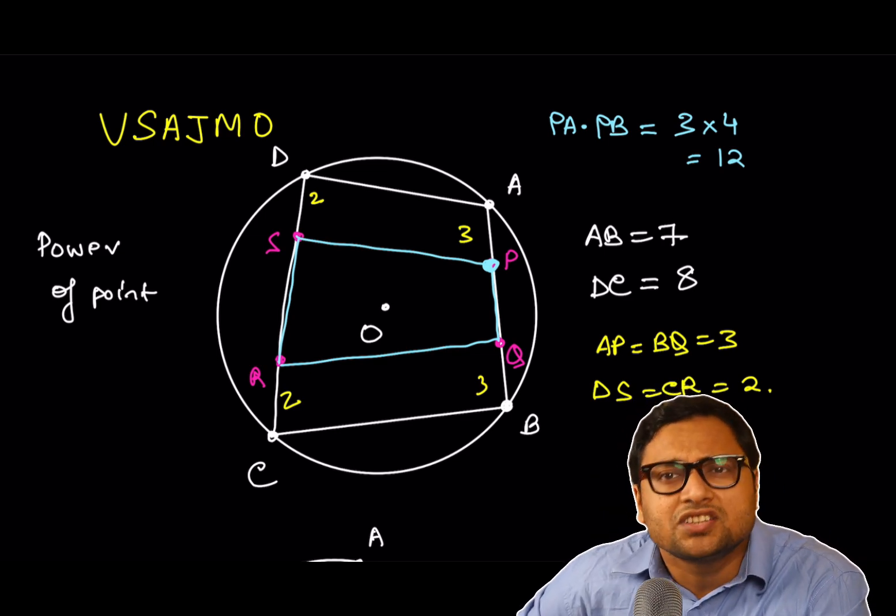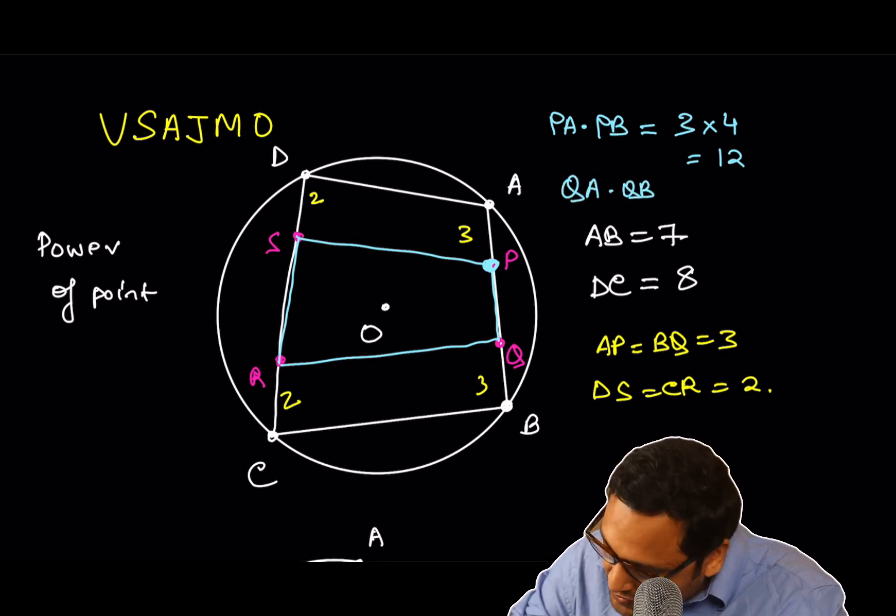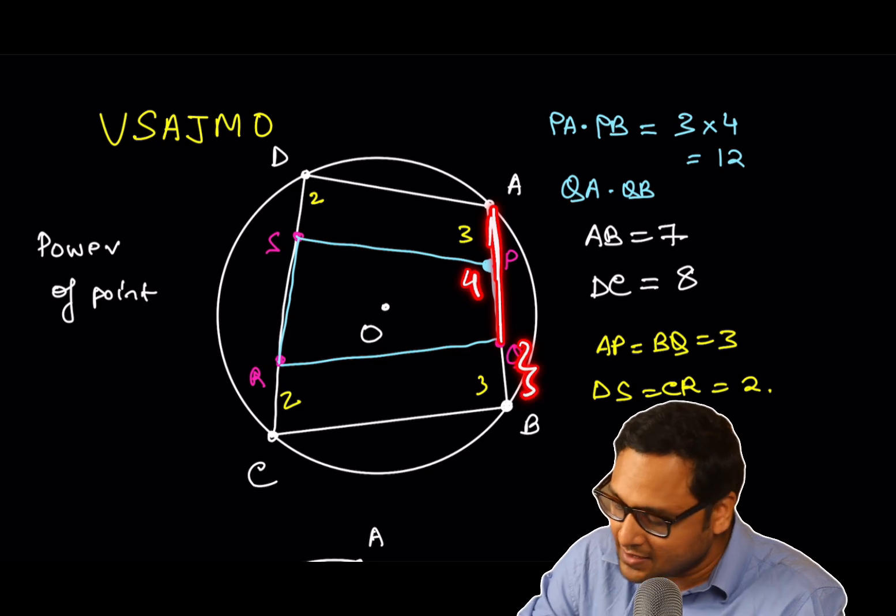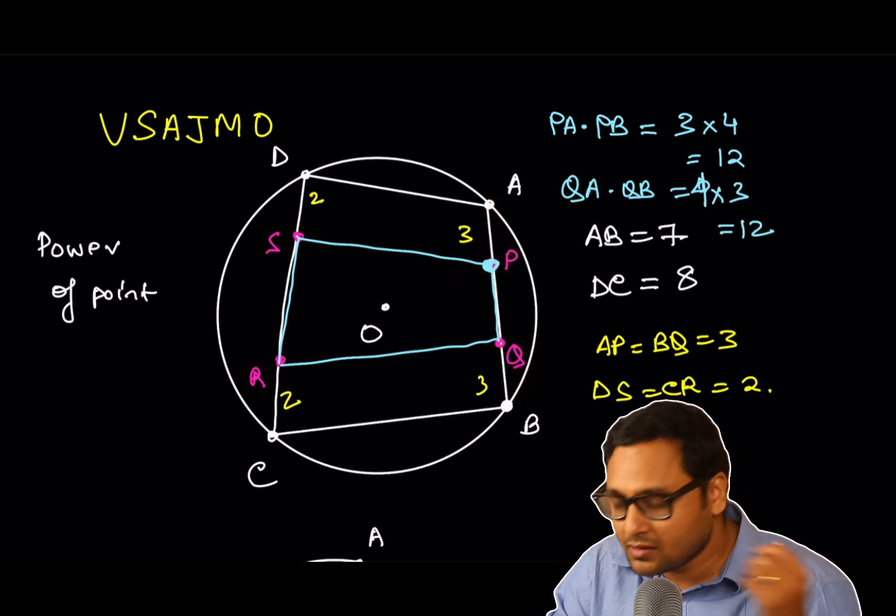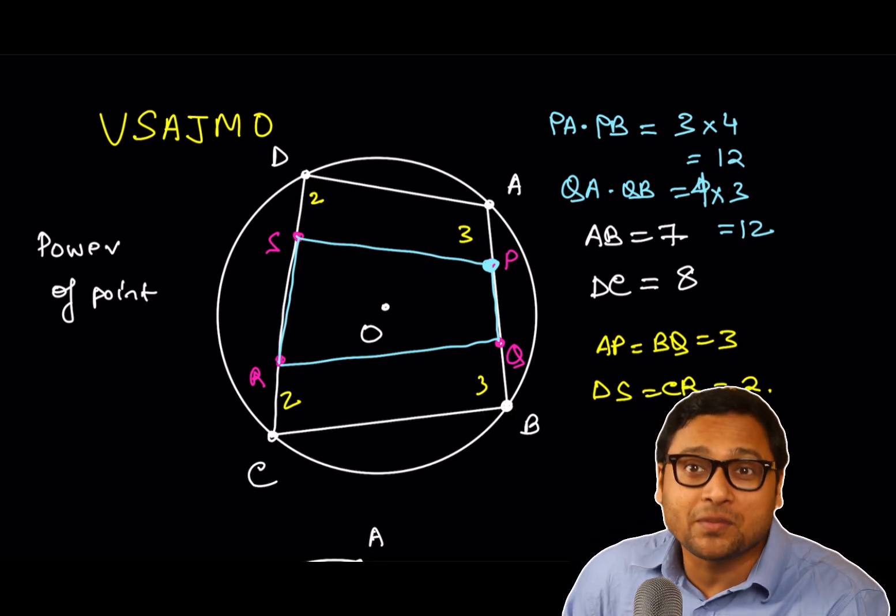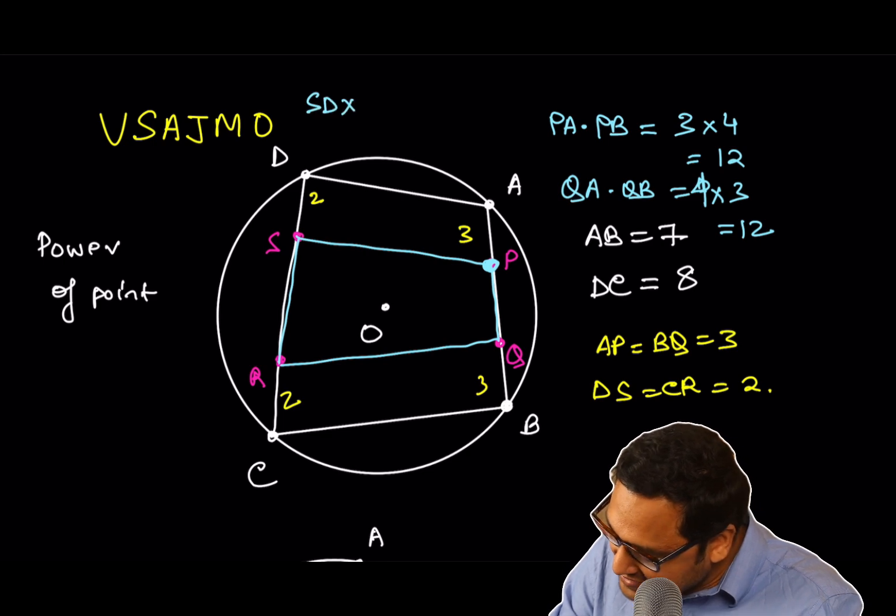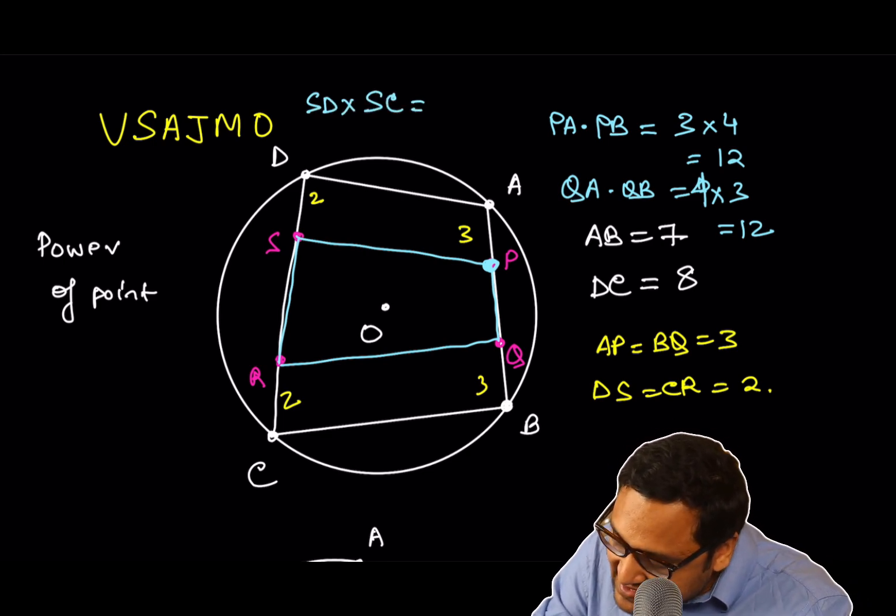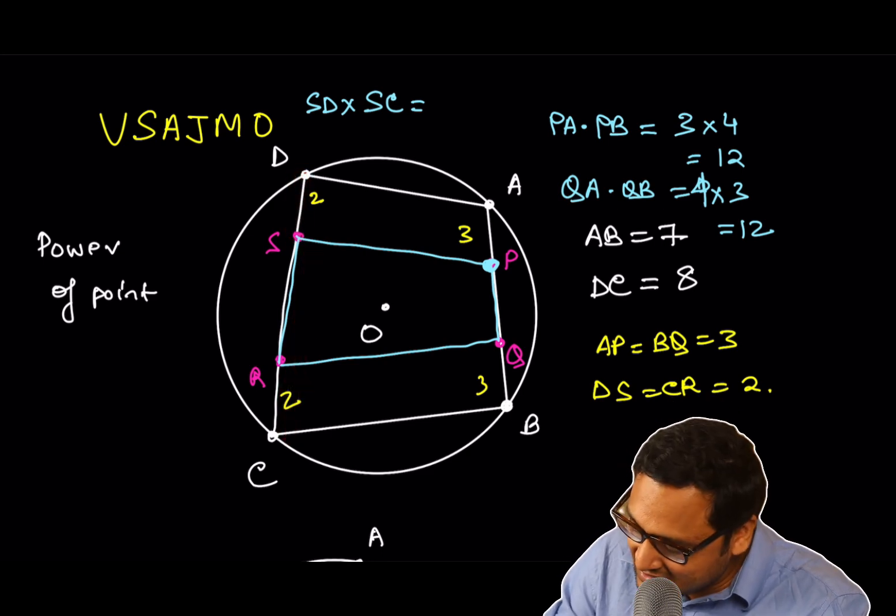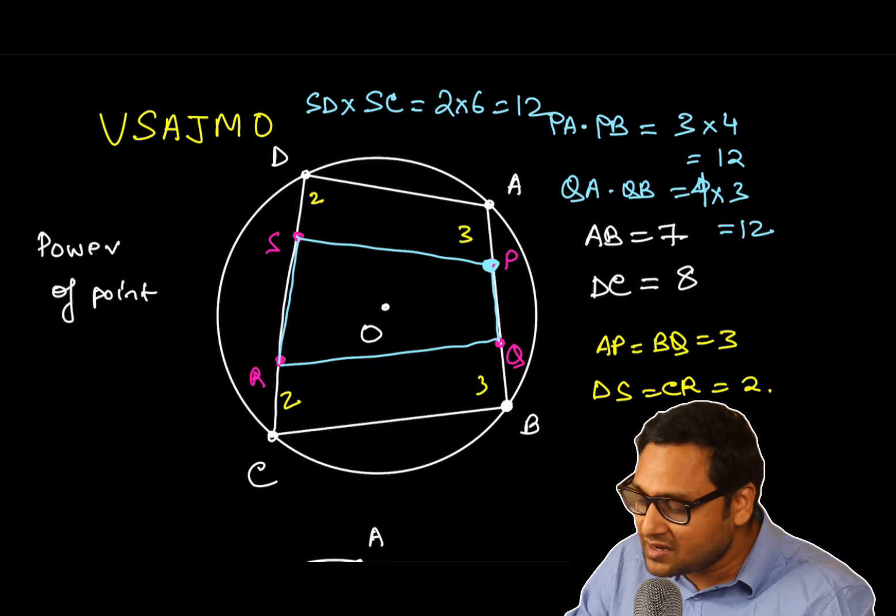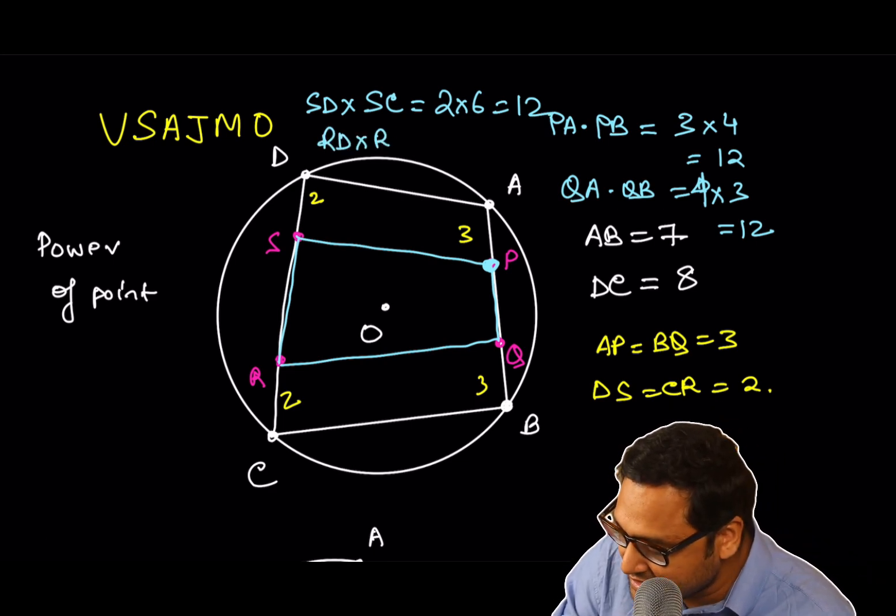What about the power of the point Q? Well, QA times QB. So notice that QA is 4 and QB is 3. So that's again 3 times, 4 times 3, which is 12. What about S? What is the power of the point S? So SD times SC. SD is 2. SC is 6. 2 times 6, that's 12. Similarly, power of the point R is also 12. RD times RC is 12.